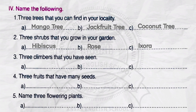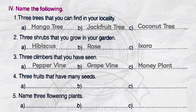Number 3. Three climbers that you have seen. A. Pepper vine. B. Grape vine. C. Money plant. Number 4. Three fruits that have many seeds. A. Papaya. B. Watermelon. C. Orange.